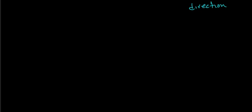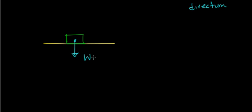Now imagine we have some object — for example, a box sitting on the ground. We know there's at least one force acting on this object: the force due to gravity. We have to ask ourselves: why does this object not just accelerate right through the ground? What's stopping it from traveling through the center of the Earth? The answer is that there is another force — the ground pushes up on the object, preventing it from accelerating through. That's the normal force, acting in the upward direction.